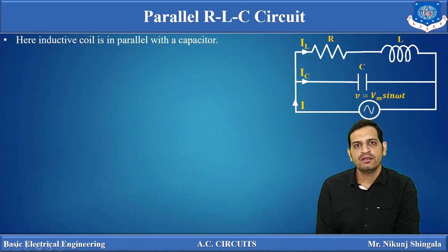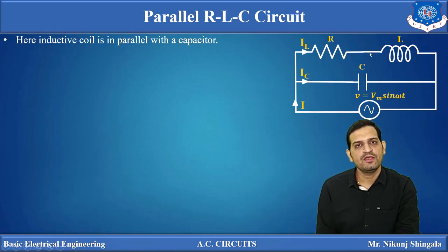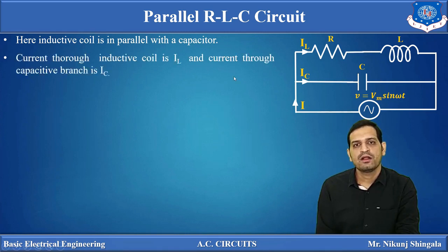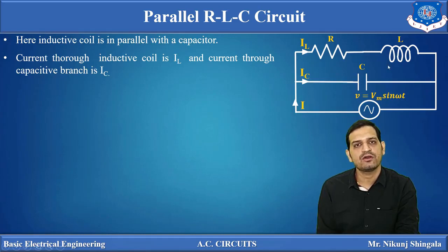Here you can see one circuit which consists of two branches, both in parallel. The first branch consists of a series combination of a resistor and inductor, known as an inductive coil, because the coil has certain resistance present within it. This branch is connected in parallel with a branch which consists of a pure capacitor. Current through the inductive coil is IL and current through the capacitive branch is IC. That current will flow when we apply an AC source across this parallel combination.